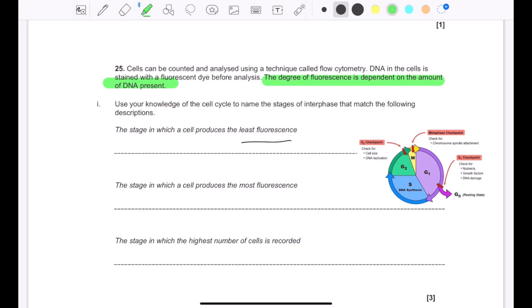So the stage in which a cell produces the least fluorescence, well, what's another way of saying that? It's the stage in which a cell produces the least amount of DNA. And so where is it? Luckily for you, I put the image of the cell cycle, so we can refer to it together. Where there'll be the least DNA is, I would say, very obviously G1, because that is before S phase, which is DNA replication. And so naturally, this would have the least amount of DNA.